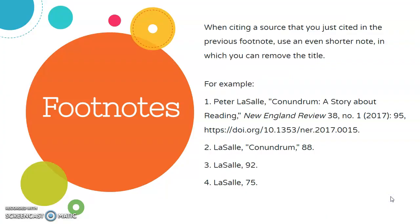To take this even further, if you find yourself using the source even more times, there's an even shorter version of the footnote to use. The first time you cite the source, it gets the full version with full name, article title, journal title, volume, issue, and so on. The second time, use a shortened version with just the last name, shortened title, and page number. Now if you happen to use the source again, then you use just the last name and the page number, as shown in footnotes numbered one through four.